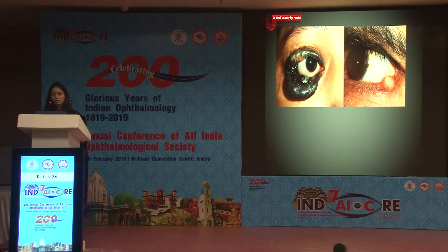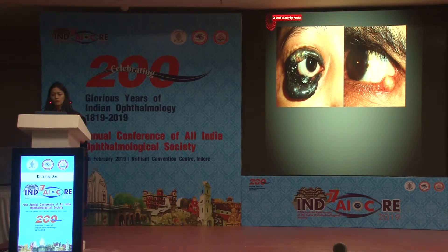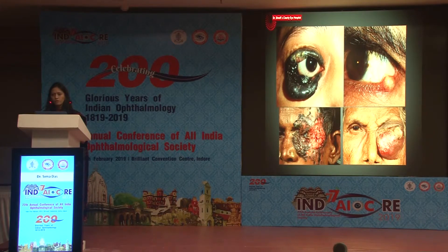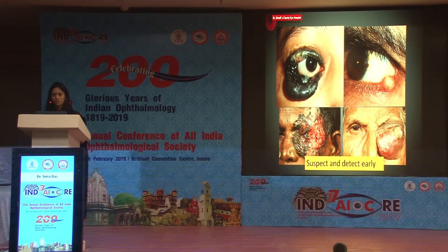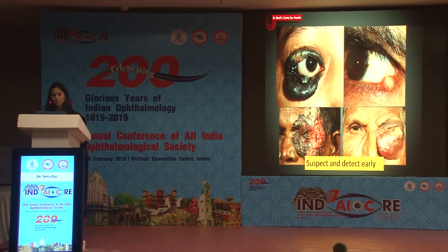Conversely, a small eyelid nodule that looks like a chalazion can actually be a sebaceous gland carcinoma. Sometimes cursory look can be misleading, and we might mistake a malignancy for a benign lesion or vice versa. It's important to suspect and detect lesions early to prevent them from reaching an advanced stage.